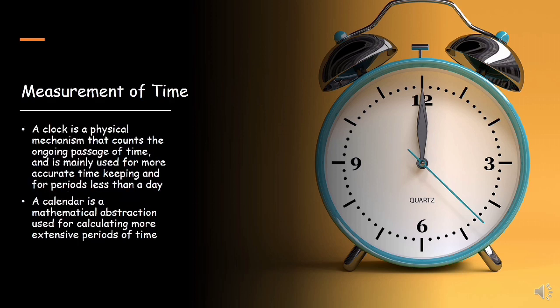Measurement of time. There are two basic instruments used for measuring time. Number one is the clock. A clock is a physical mechanism that counts the ongoing passage of time and is mainly used for the accurate measurement of time less than a day.